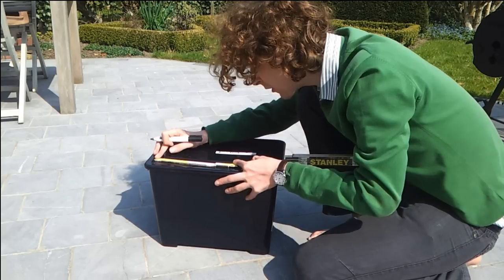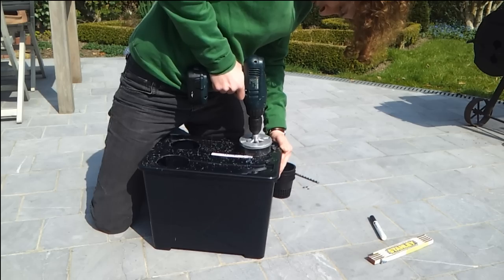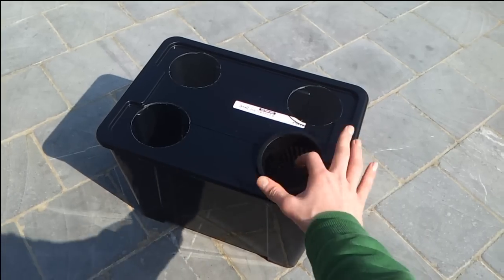In the meantime, you can start constructing the grow boxes. Buy some plastic containers, cut holes in the lids for the net cups, insert the net cups and you're done.